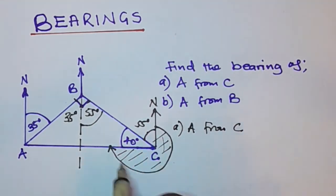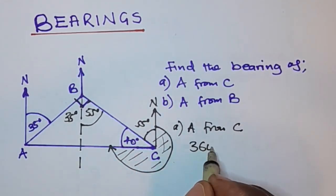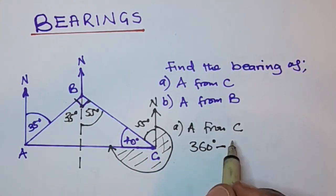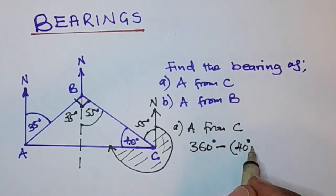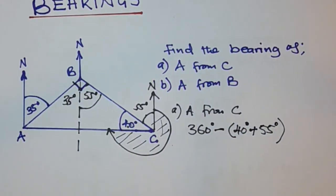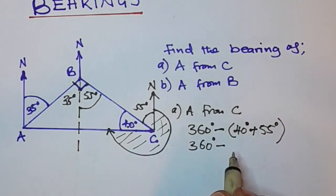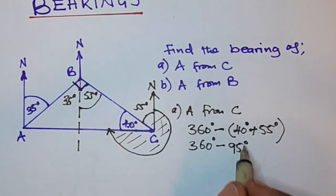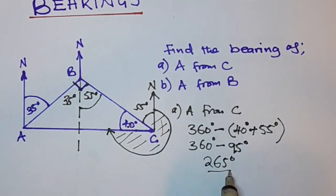So the bearing of A from C: we say 360 degrees minus 40 degrees plus 55 degrees. That gives 360 degrees minus 95 degrees, which equals 265 degrees. So the bearing of A from C is 265 degrees.